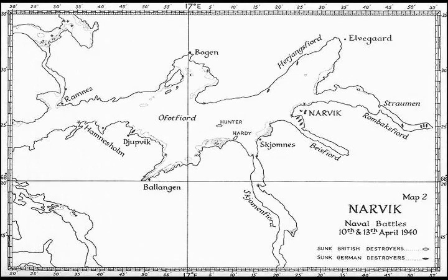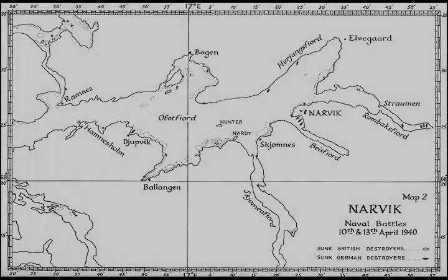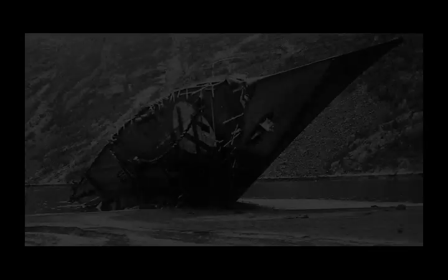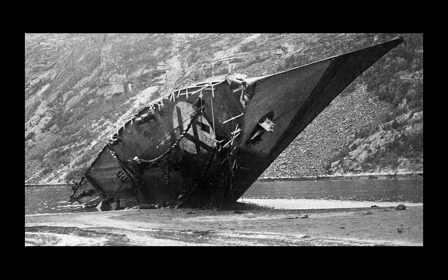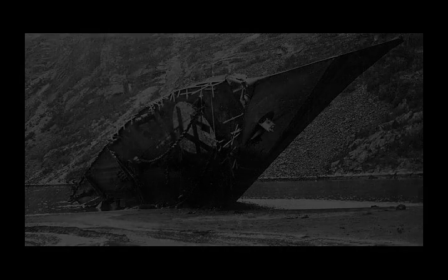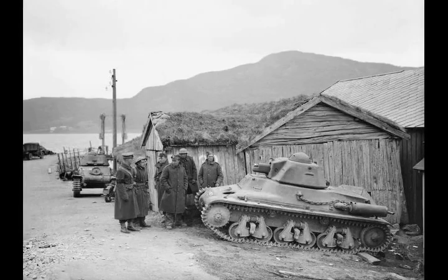The ten destroyers were Georg Thiele, Wolfgang Zenker, Bernd von Arnim, Erich Giese, Erich Koellner, Diether von Roeder, Hans Lüdemann, Hermann Künne, Wilhelm Heidkamp, and Anton Schmitt, commanded by Commodore Friedrich Bonte. Each warship carried around 200 soldiers from the 139th Mountain Regiment of the 3rd Mountain Division, commanded by General Eduard Dietl. The troop-carrying destroyers were escorted most of the way by the battleships Scharnhorst and Gneisenau.